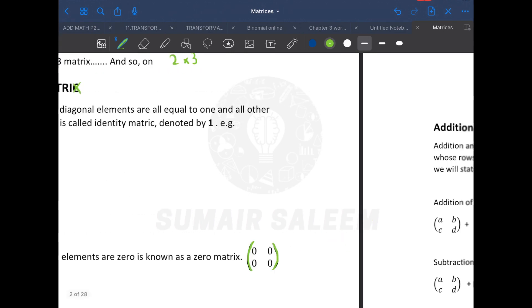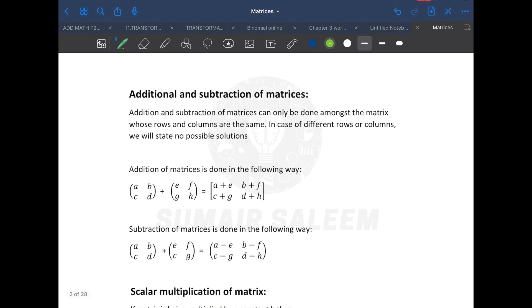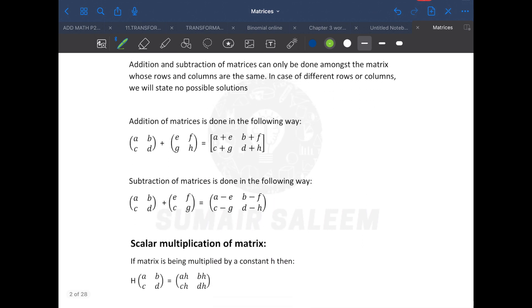Let's proceed to addition and subtraction. Addition and subtraction of a matrix is only possible if the orders are same. See, what's the order of this matrix? Two row, two column. What's the order of this matrix? Two row, two column. That's why I can add or subtract.